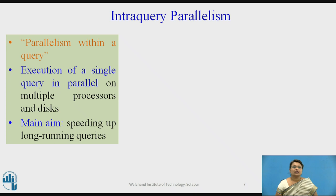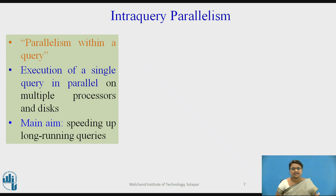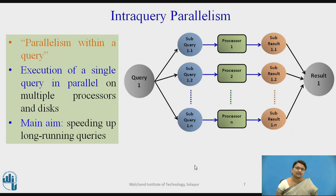In intraquery parallelism, parallelism is applied within a single query. A query may have n number of operations, and based on those the parallelism is implemented. Execution of a single query runs in parallel on multiple different processors. The aim is speeding up long-running queries. A single query is subdivided into subquery 1.1, 1.2, through 1.n, each given to a separate processor, and all sub-results are collected into a final result.